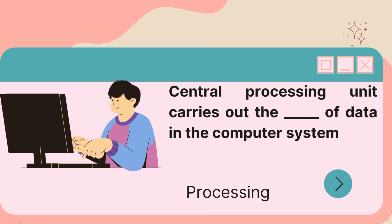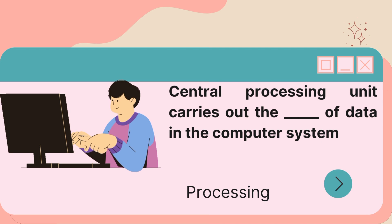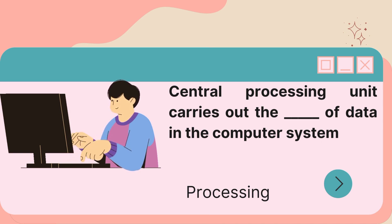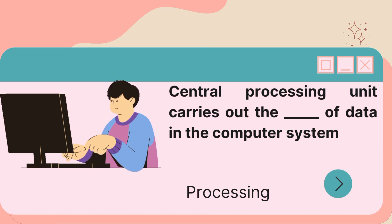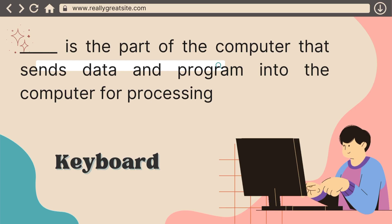The next one says: central processing unit, which is also called the CPU, carries out the processing of data in the computer system. The CPU — that's why it's called processing — carries out the processing, the central processing unit.